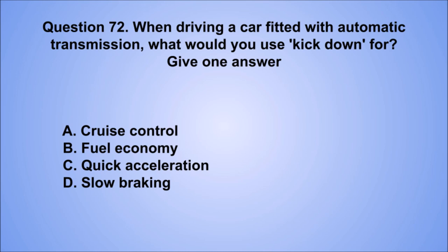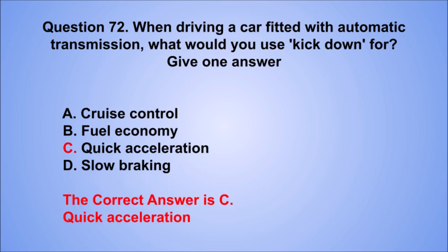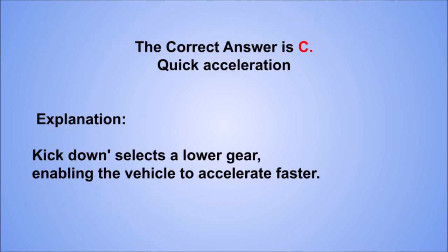Question 72. When driving a car fitted with automatic transmission, what would you use kick down for? Give one answer. A. Cruise control. B. Fuel economy. C. Quick acceleration. D. Slow braking. The correct answer is C, quick acceleration. Kick down selects a lower gear, enabling the vehicle to accelerate faster.